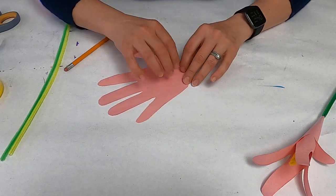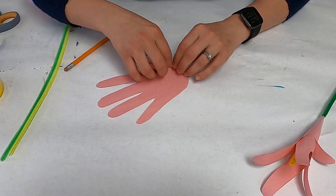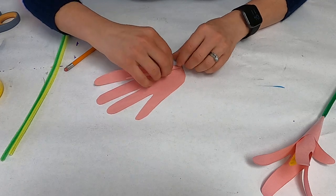You just want to roll the bottom. You don't want to roll all the fingers, you want to keep it a little bit loose. We just want that cone shape on the very bottom.